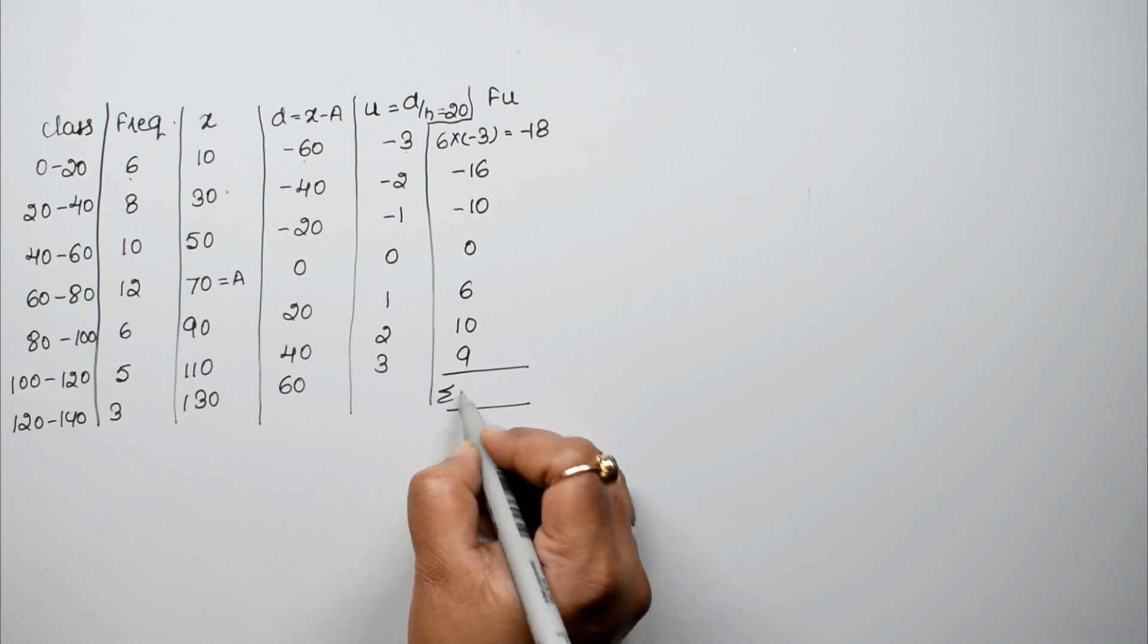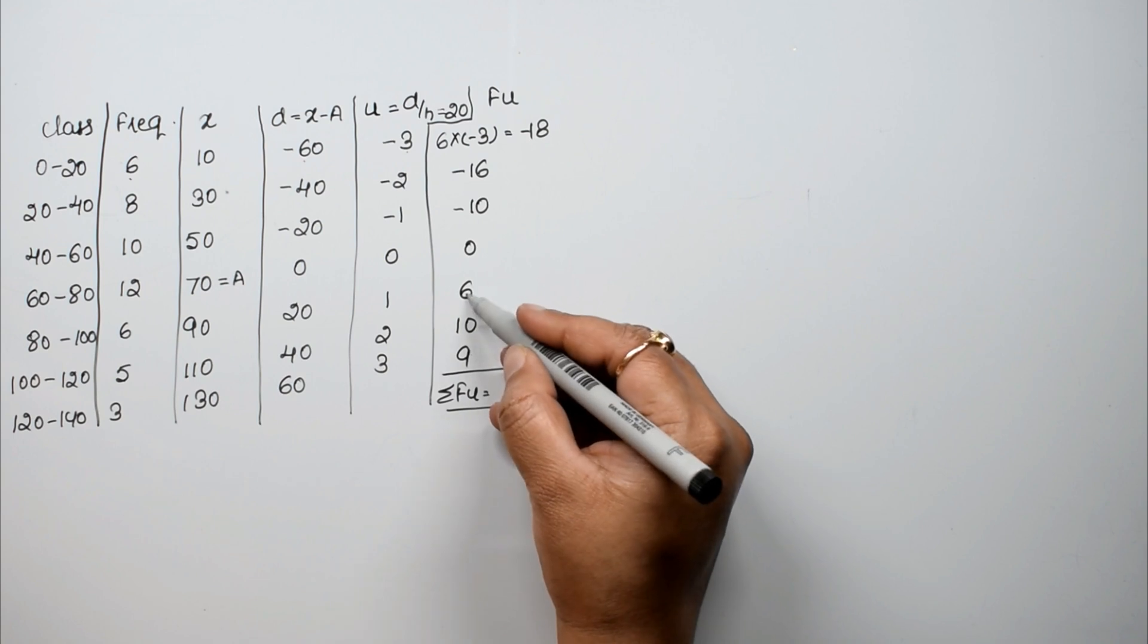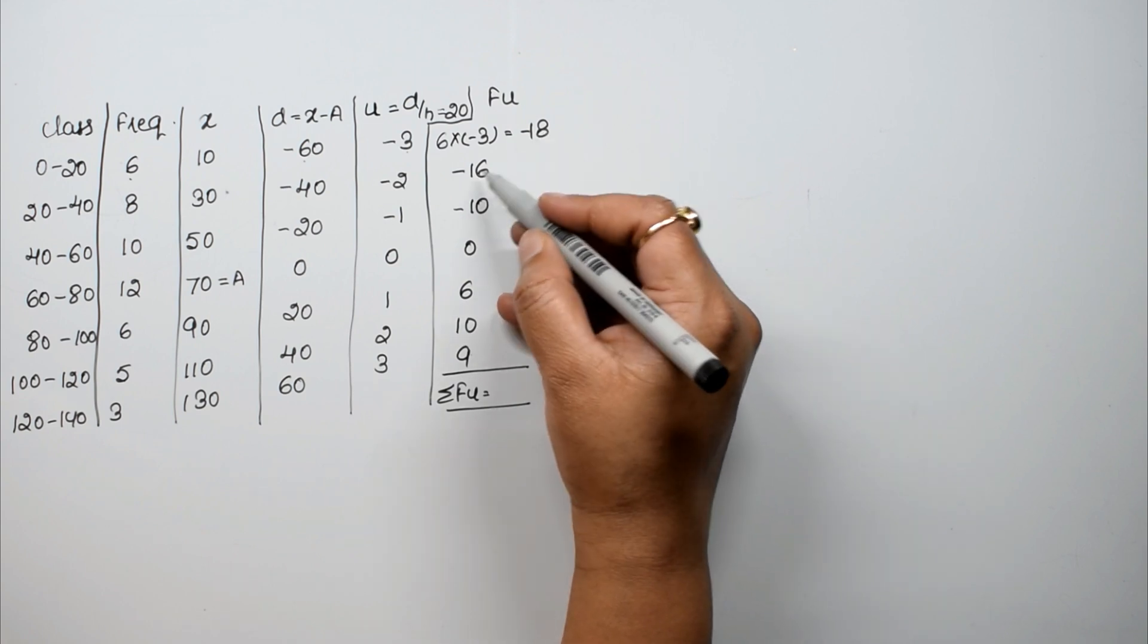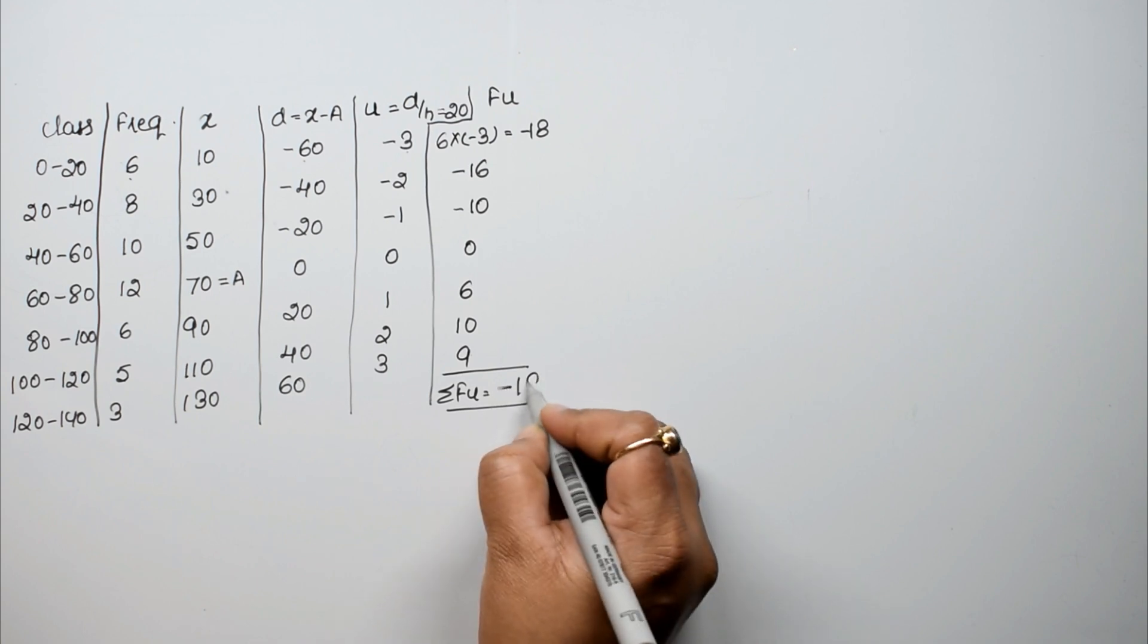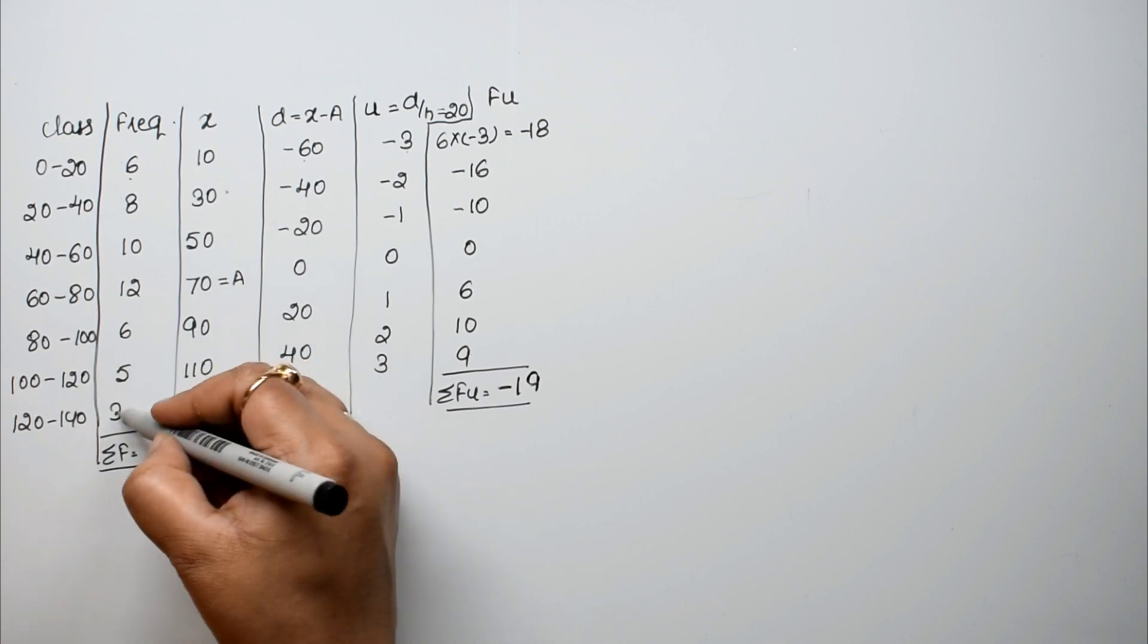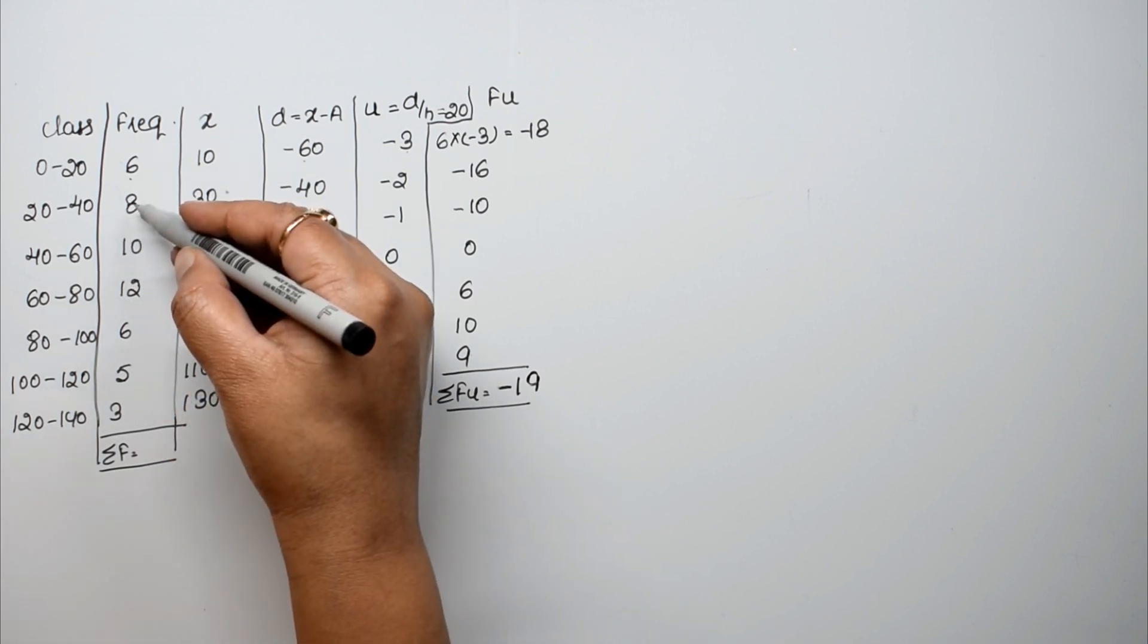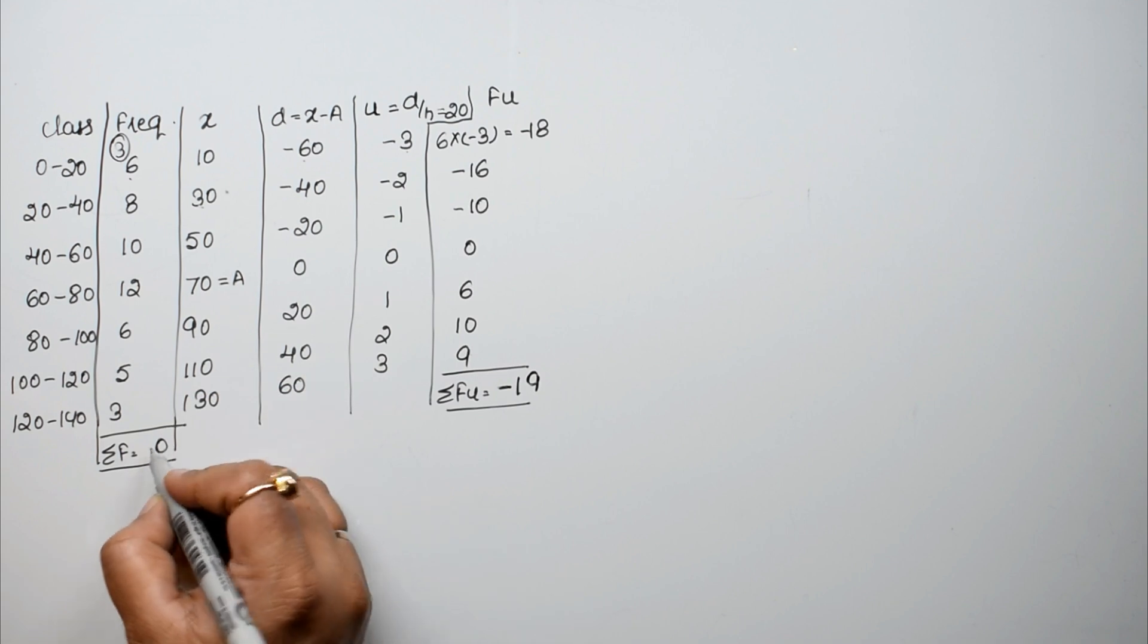So sigma f u kitna a gya humara? Here a gya. 9 plus 10 is 19, 25. And here 26 and 18. So 25, 1 bacha is 18, and 18 is 19. So minus 19. I have done direct calculation. And sigma f kitna a gya? 8, 14, 15, 16. 16 plus 8 is 24, 30. 0, 3 carry, 4, 5, 50 a gya.